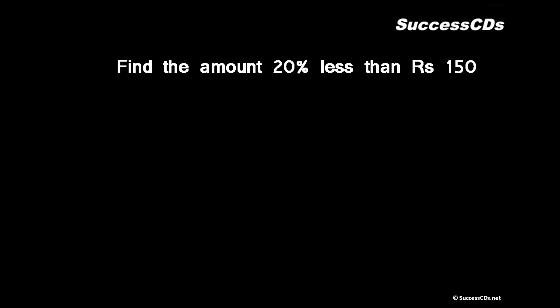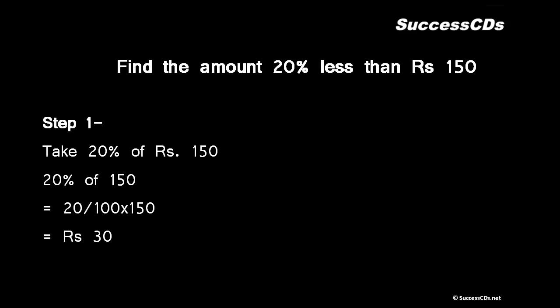Let's have a look at another example: find the amount 20 percent less than rupees 150. Here we need to find a value which is lesser than 150, and by how much - 20 percent. Step one is take 20 percent of rupees 150. 20 percent of 150 comes out to be 20 by 100 into 150. Dividing with the common factors, the answer comes out to be rupees 30.